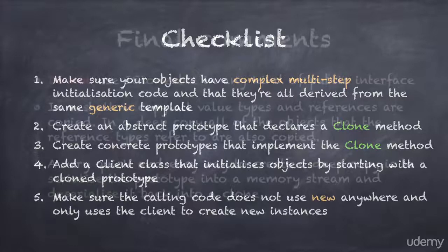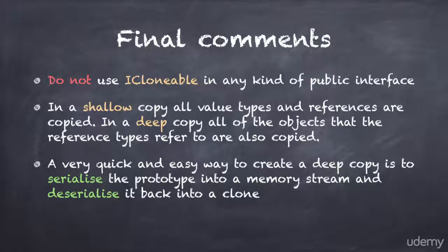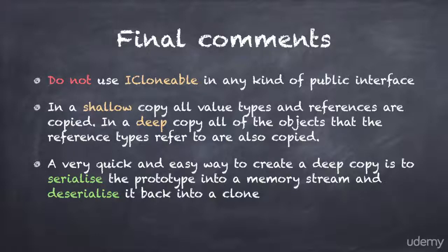And here are some final comments. My example used a base class, and I mentioned that you can also use an interface. Now, you might be aware that the .NET framework already has an interface for cloning objects called iClonable — so why didn't I use that one? The reason is that it is completely unclear if iClonable should create a shallow or a deep copy. Microsoft never defined how the interface should behave, and therefore they actually discourage you from using it in any kind of public interface. Instead, you are encouraged to create your own clone method, just like I did in my code.